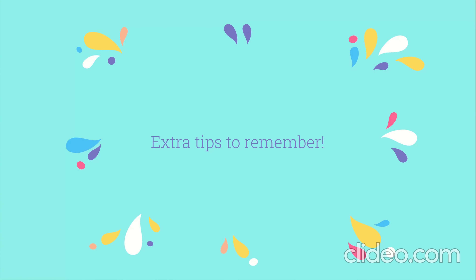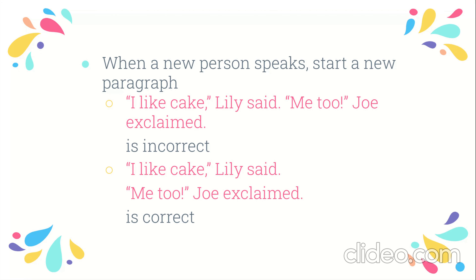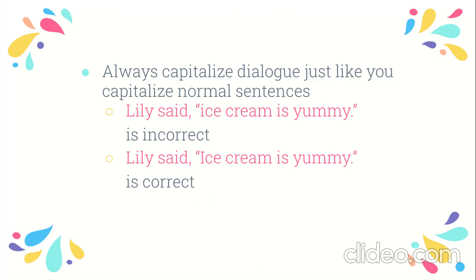Here are a few extra tips. First, when a new person speaks, start a new paragraph. Writing 'I like cake, Lily said. Me too, Joe exclaimed' in the same paragraph is incorrect — it's confusing because you can't tell who's saying 'me too.' The correct version puts 'Me too, Joey exclaimed' in a new paragraph. Also, always capitalize the dialogue just like you capitalize normal sentences. Even if the spoken words aren't at the beginning of the full sentence — for example, 'Lily said, ice cream is yummy' — 'ice cream' still gets capitalized because it starts the dialogue sentence.